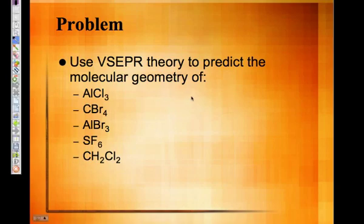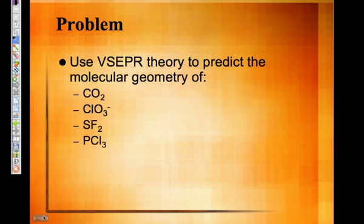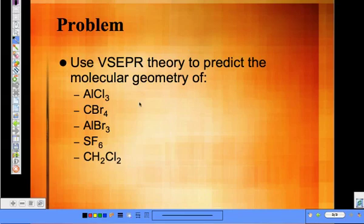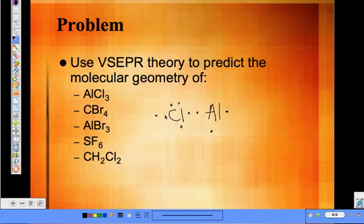So AlCl3 — aluminum has three valence electrons and chlorine has seven. We'll count up the total valence electrons and draw out the Lewis structure. Aluminum is one of the exceptions — it's stable with just six valence electrons.